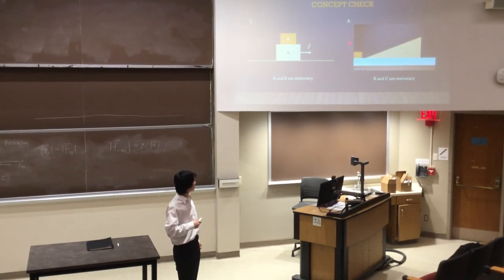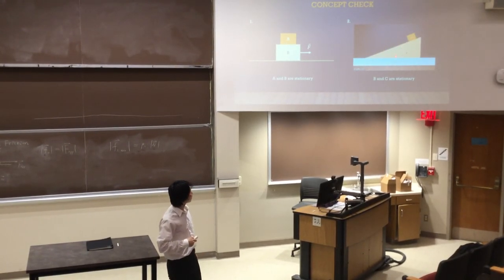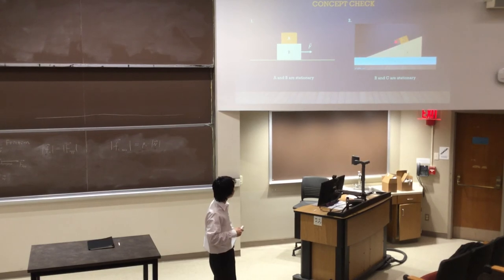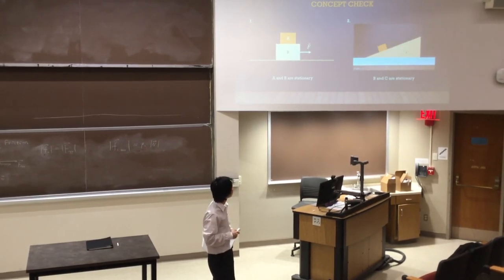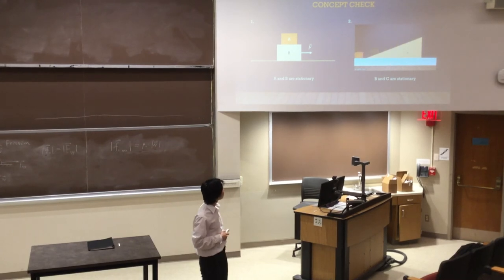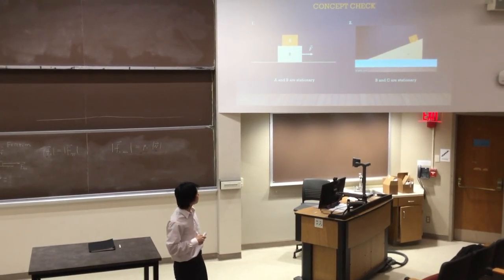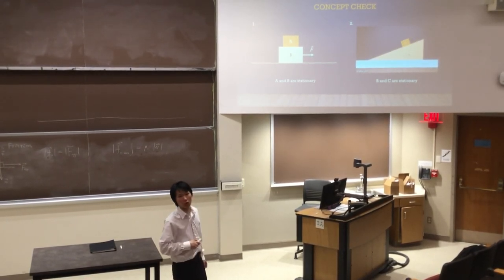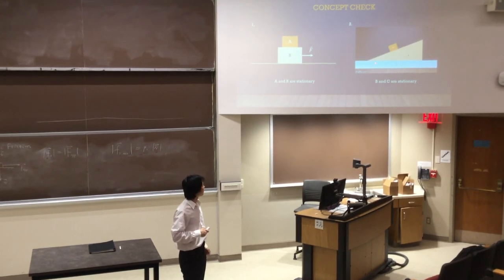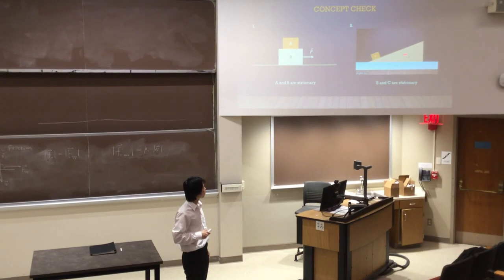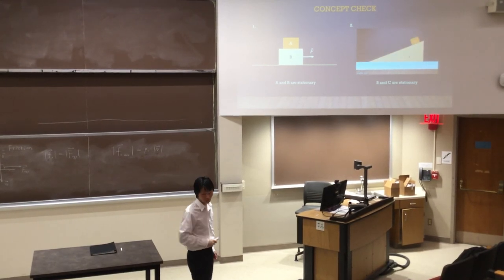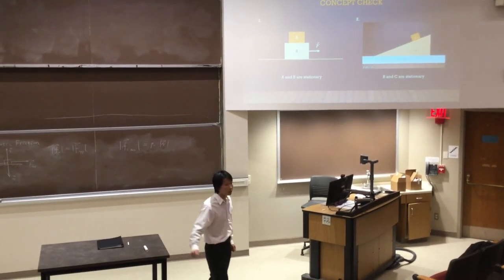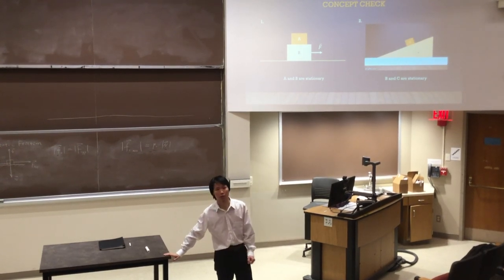In the second question, we have an incline B sitting on board C. And there is block A sliding down on the incline. This is A, this is B, and this is C. Now, let's assume there is no friction between A and B, and also both B and C are stationary. The question is, does the board C exert any static friction on the incline B? If it does, what is the direction of the static friction? You have two minutes. I will collect your answers after the lecture.